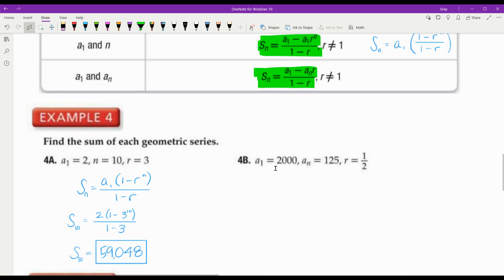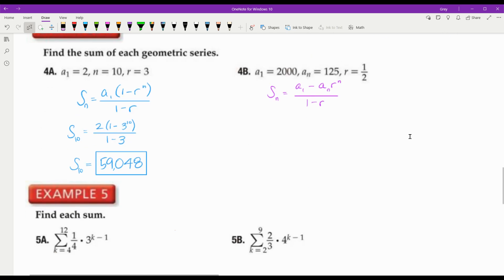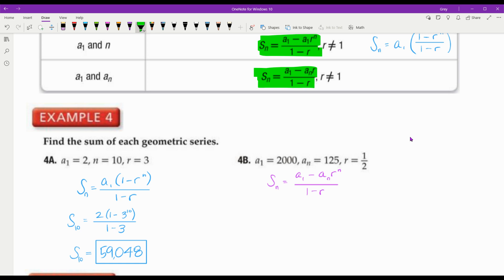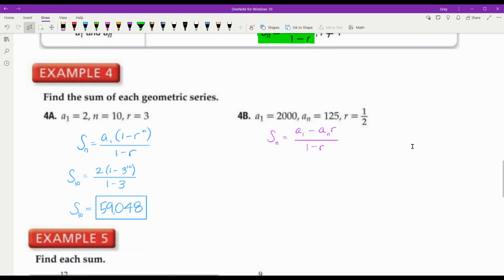Look at 4b. 4b is an example where they actually gave me the last term. So this time I'm going to use that formula. So my formula is S sub n equals A sub 1 minus A sub n r over 1 minus r. That n is not there. I don't know why I put that in there. It's just r. You don't do that twice. So what is my n? I don't know what my n is. I don't have to know what my n is because I know what everything else is in the formula. So S sub n, A sub 1 is 2,000, A sub n is 125, and r is 1 half. So again, you should pause, put in your calculator, and make sure you can do that correctly. And you should get 3,875.